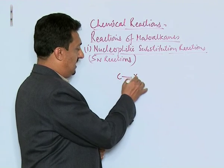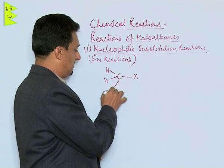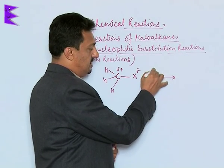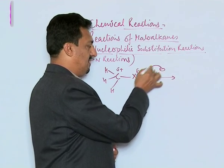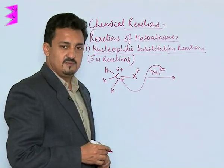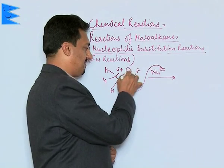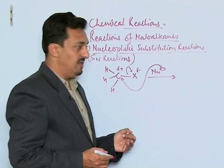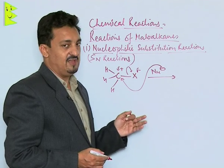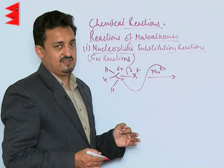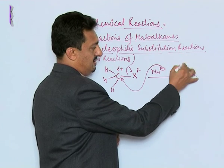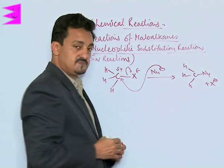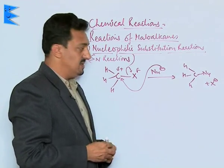Alkyl halides have a polar C-X bond. If we introduce a nucleophile, it will attack this electron-deficient carbon and replace X⁻, which comes out as a leaving group — a halide ion. The nucleophile takes its place, and therefore the reaction is called a nucleophilic substitution reaction.